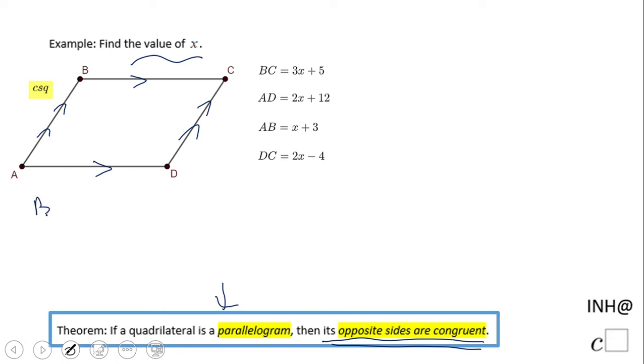This means BC is congruent to AD and AB is congruent to DC, which translates into equations. The measure of BC is 3x plus 5, and is equal to the measure of AD, which is 2x plus 12.